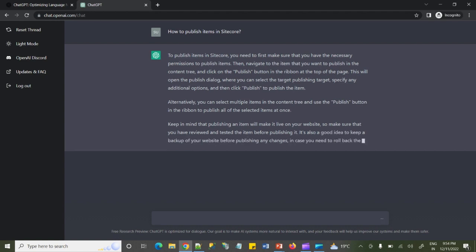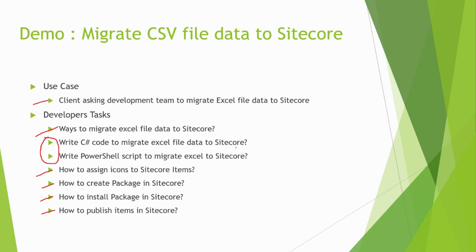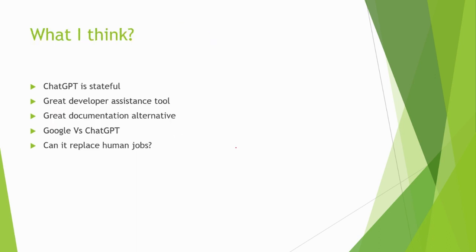It's working well. Within your team, if you have junior developers who are struggling to understand anything, ChatGPT will be a very helpful product for them. Overall, ChatGPT is stateful so it can remember your last conversation and give you a response based on that. It's a great developer assistant tool — I won't say it's going to replace us, but it's a very good tool that can assist in project development. For documentation, as a developer I personally prefer direct code, so this is good.